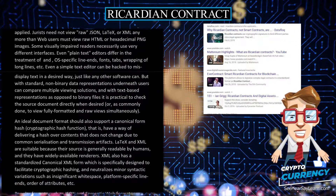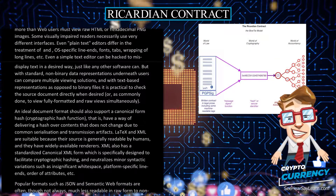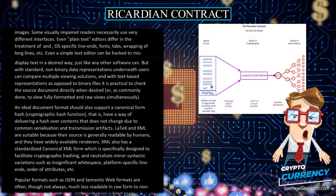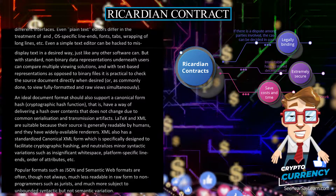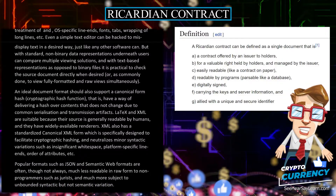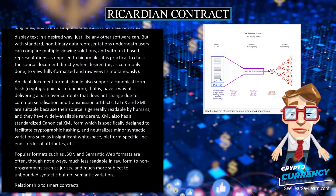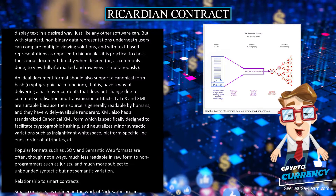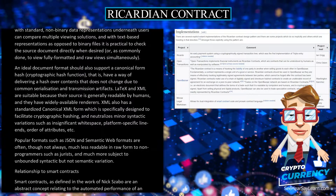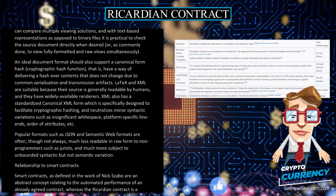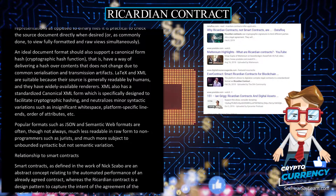LaTeX and XML are suitable because their source is generally readable by humans, and they have widely available renderers. XML also has a standardized canonical XML form which is specifically designed to facilitate cryptographic hashing, and neutralizes minor syntactic variations such as insignificant white space, platform-specific line ends, order of attributes, etc. Popular formats such as JSON and semantic web formats are often, though not always, much less readable in raw form to non-programmers such as jurists.